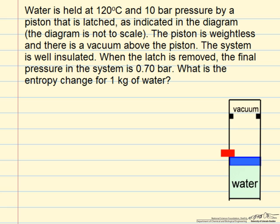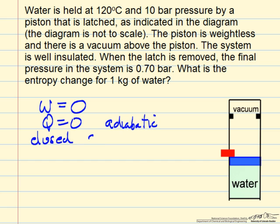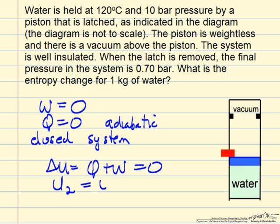So the fact that the piston is weightless and there's a vacuum above it means W is equal to zero for this system. The fact that it's well insulated means Q is zero, so we can treat this as an adiabatic system, and it's a closed system. If we apply the first law to a closed system, delta U is Q plus W equals zero, so U2 equals U1.